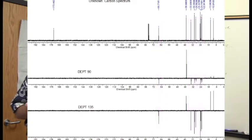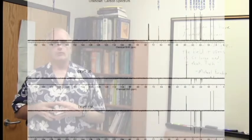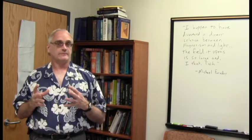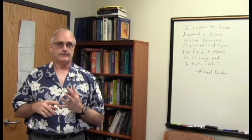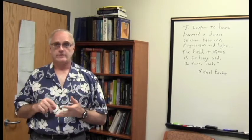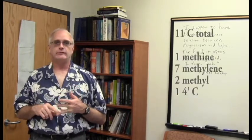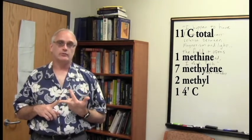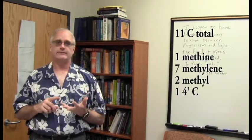And we have the peak over here at about 172 ppm in the carbon, missing in the DEPT-90, missing in the DEPT-135. This one is clearly a quaternary. So we can put together at least a draft, a rough draft, of a tentative formula. We have 11 carbons, we have one CH, seven CH2s, and two CH3s. That adds up to 21 protons, C11, H21.